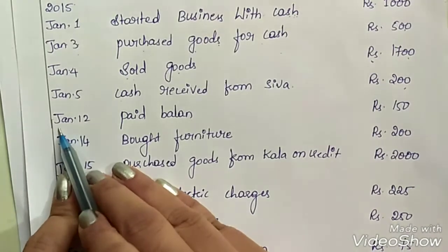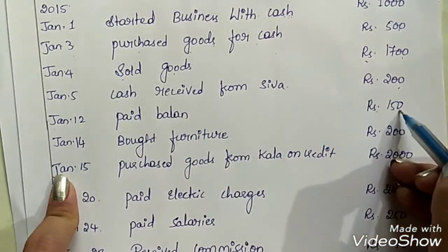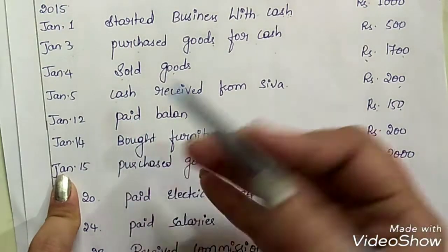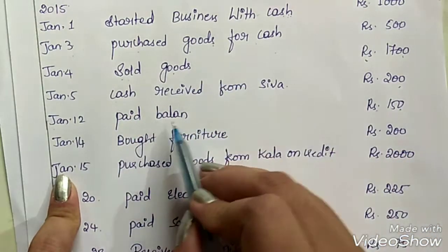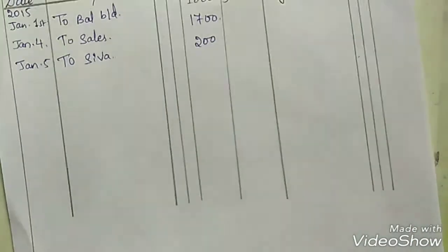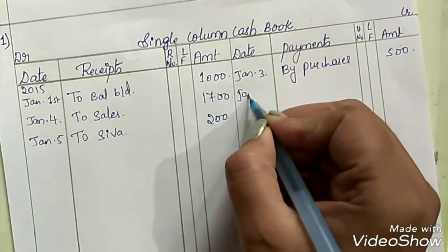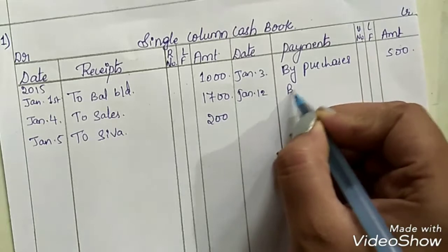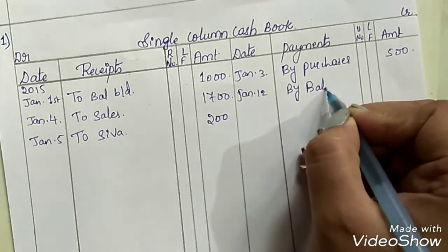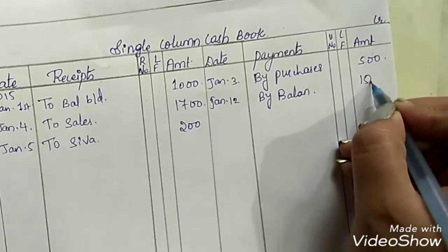On January 12th, paid Balan Rs. 150. It is clearly given that we are making a payment to Balan, so take it on the payment side. Entry: January 12th, by Balan, Rs. 150.